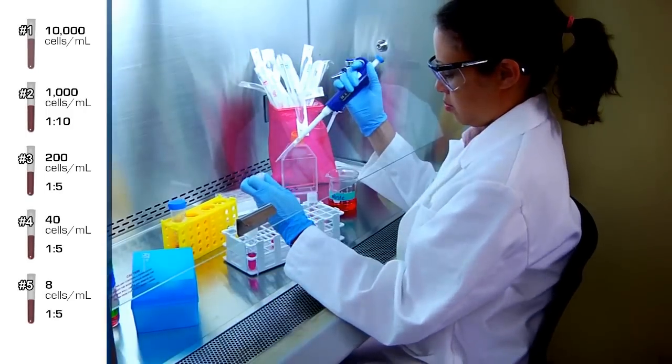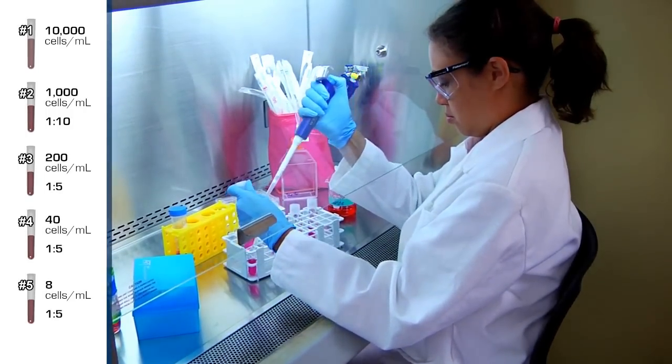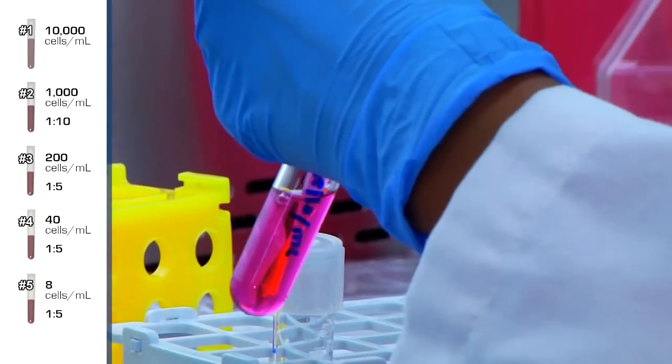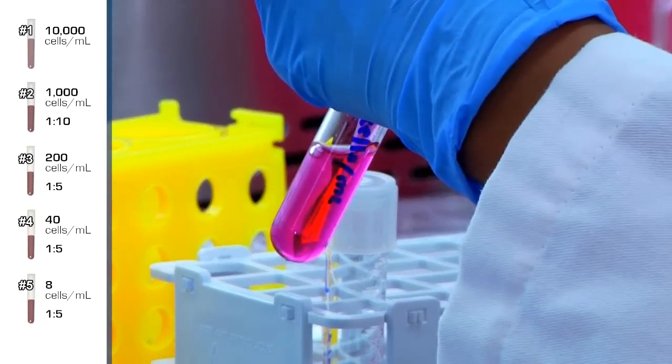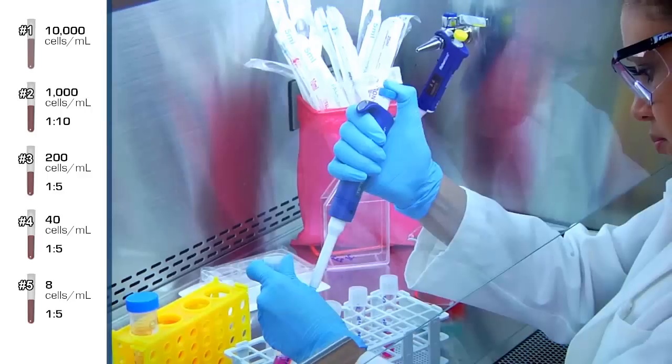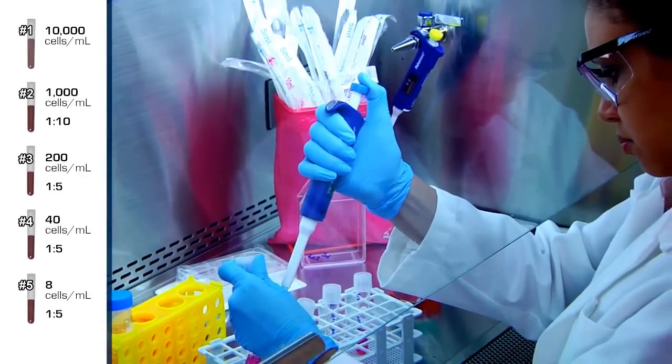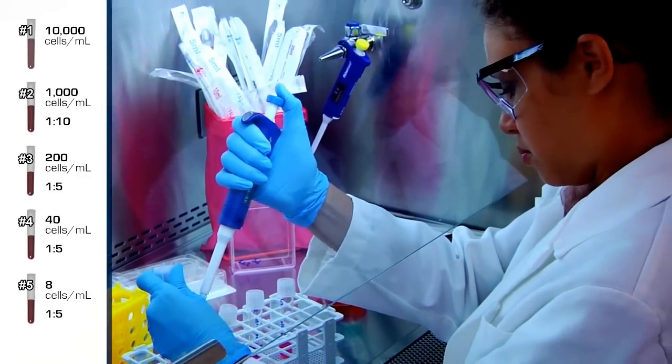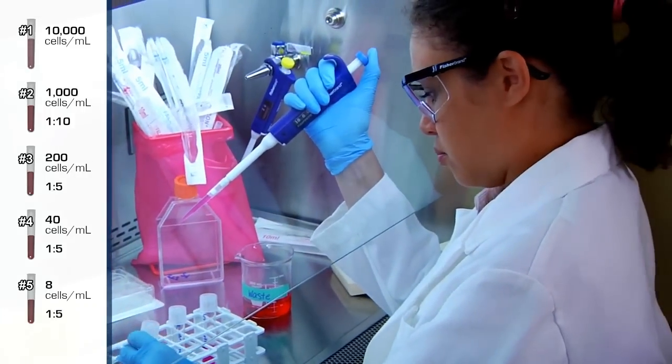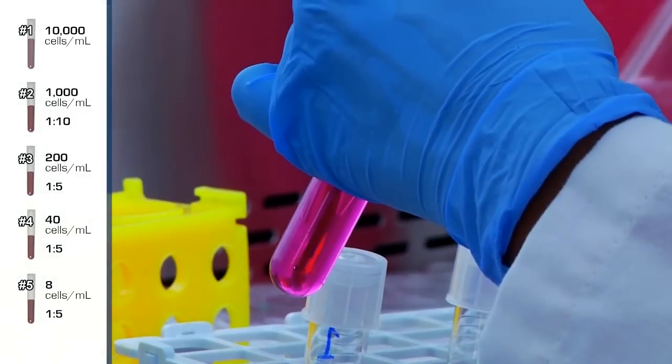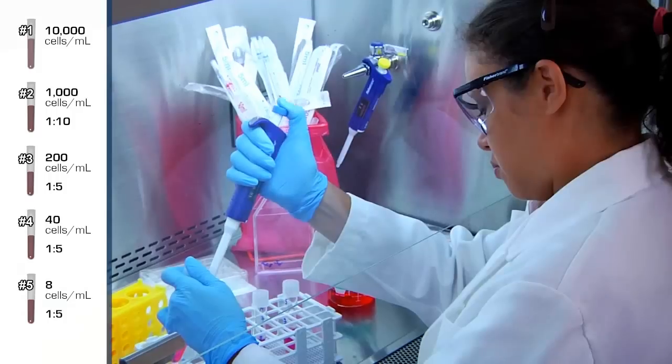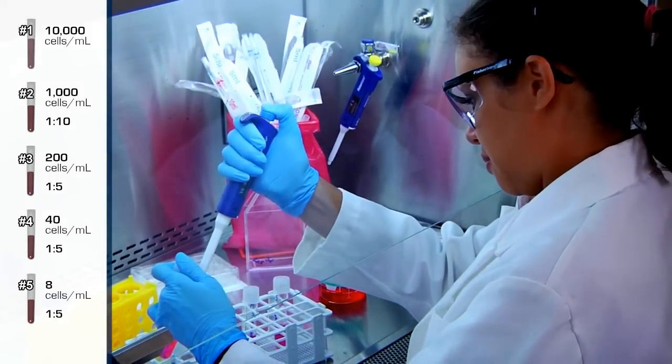Transfer 1 milliliter from tube number 2 to tube number 3 for a 1 to 5 dilution. The concentration of tube number 3 is now 200 cells per milliliter.